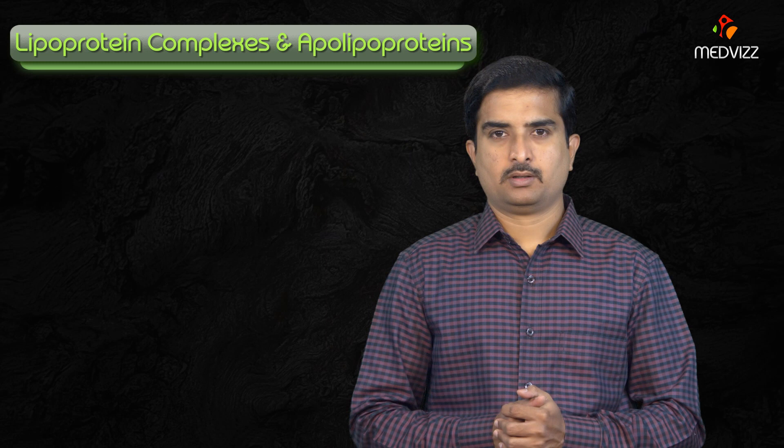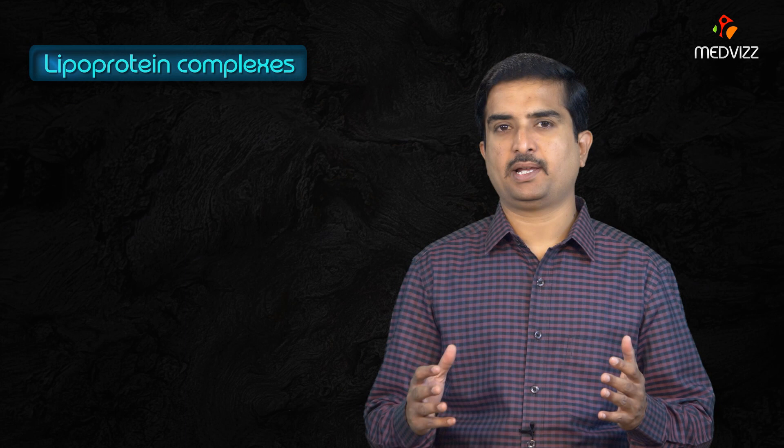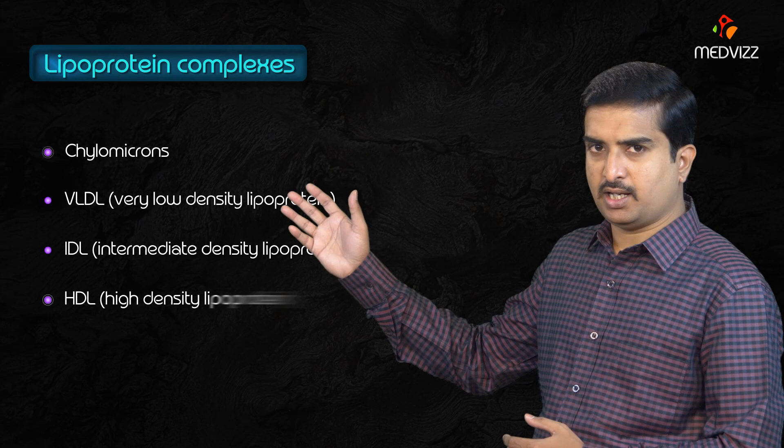Lipoprotein complexes and apolipoproteins. Lipoprotein complexes are composed of cholesterol, triglycerides, phospholipids, and apolipoproteins. The lipoprotein complexes include chylomicrons, VLDL, IDL, HDL, and LDL.